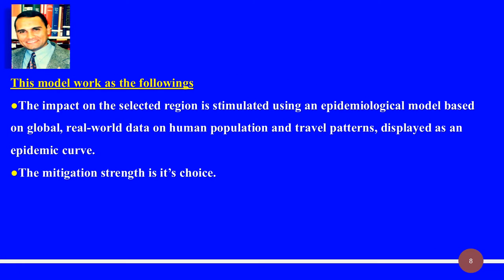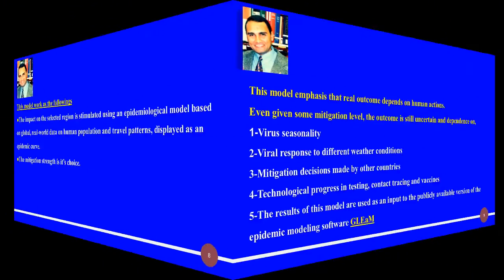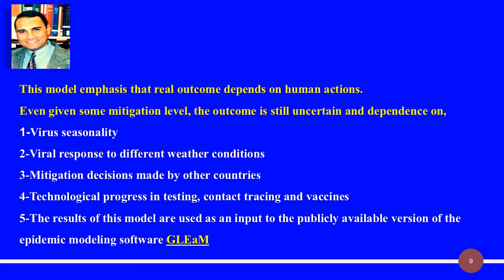This model works as follows: the impact on a selected region is simulated using an epidemiological model based on global, real-world data on human population and travel patterns, displayed as an epidemic curve. The mitigation strength is a user choice. This model emphasizes that the outcome depends on human actions. Even given some mitigation level, the outcome is still uncertain and dependent on virus seasonality, viral response to different weather conditions, mitigation decisions made by other countries, and technological progress in testing, contact tracing, and vaccines. The results of this model are used as input to the publicly available epidemic modeling software GLEAM.